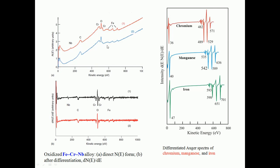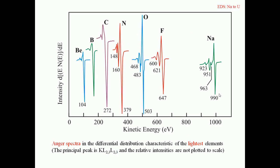This is the direct and differential Auger spectrum of Fe, Cr, Nb, and Al. In the direct form, peaks are not clearly visible, but in the differential form, peaks for chromium, manganese, and iron are distinctly seen at positions like 571, 529, 636, and 700 eV. Even for closely spaced elements, the differential Auger spectra clearly distinguish them.